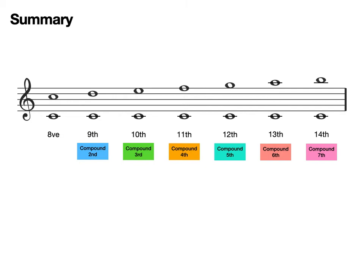If we look at the next one, and we move that D to an E, this now becomes a tenth. Because there are ten notes between the middle C and the E that we have written. But this can also be called a compound third.